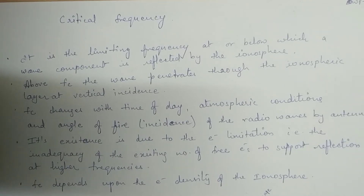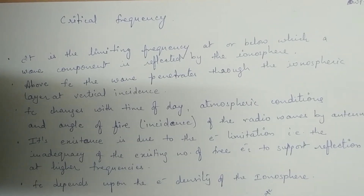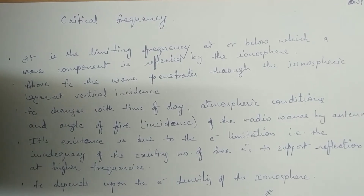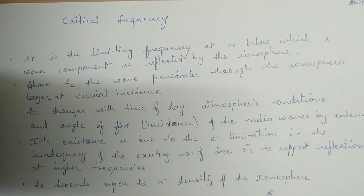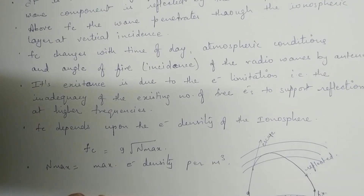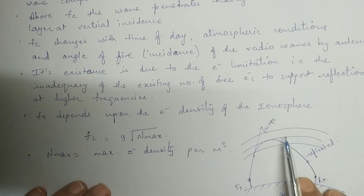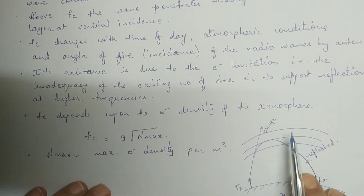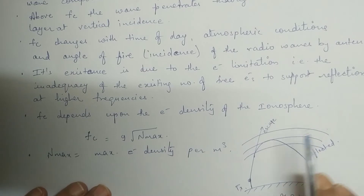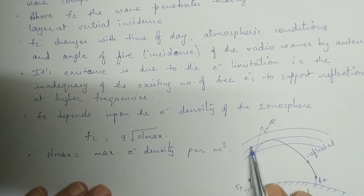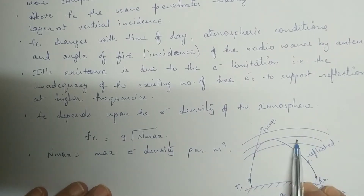Hello students, today we will learn about the critical frequency of the ionospheric layer. As we know, the ionosphere has mainly four layers: D, E, F1, and F2. Every layer has its own critical frequency.